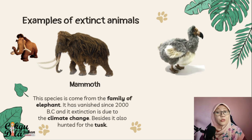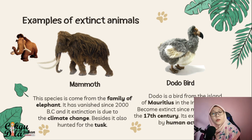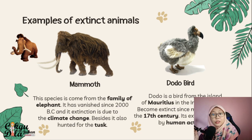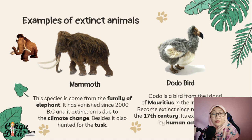Next, we move to the dodo bird. The dodo bird is from the islands in the Indian Ocean. It became extinct by the end of the 17th century. Its extinction was caused by human activities — humans hunted and ate this bird. By the end of the 17th century, this bird was already extinct and has never been seen since.